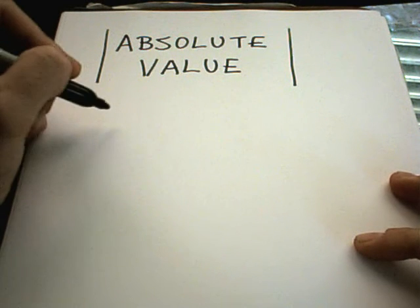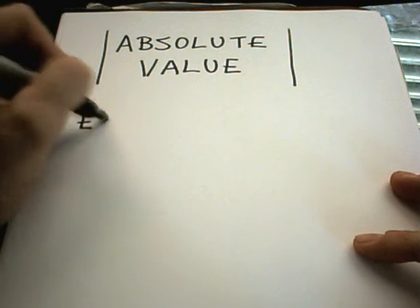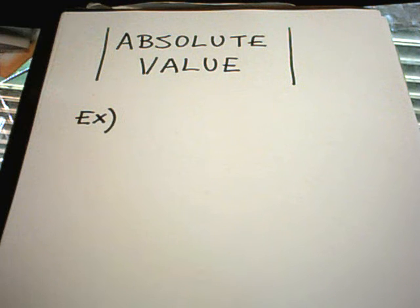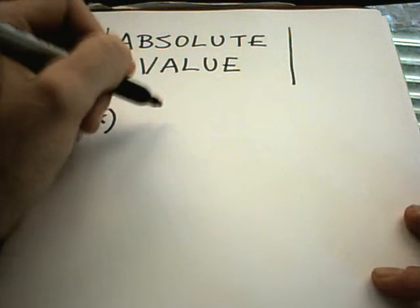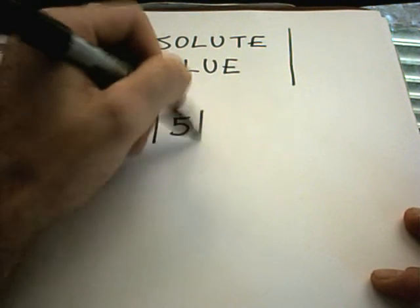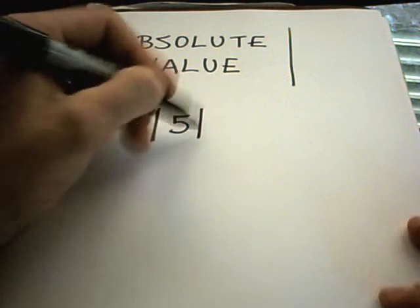Absolute value is sometimes described as being the distance of a number from 0 on the number line. I don't know, I never really thought about that. The way I always thought of it is, I almost thought about the bars as being like parentheses.